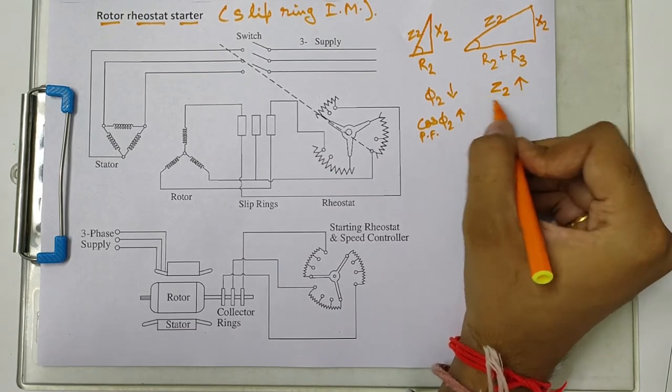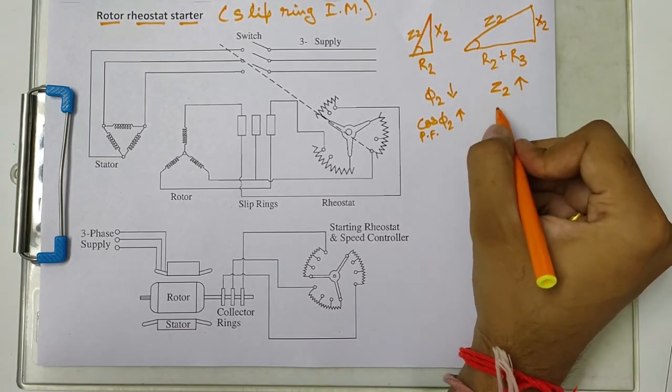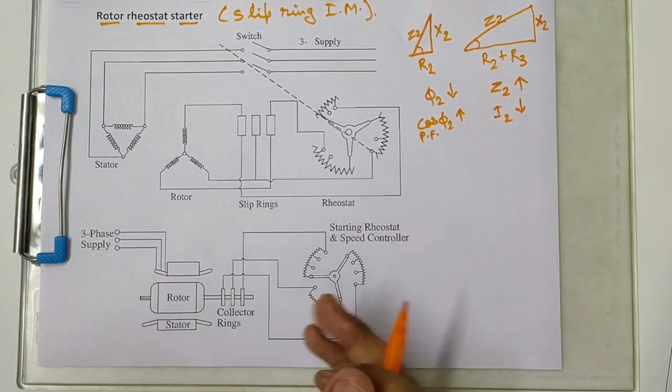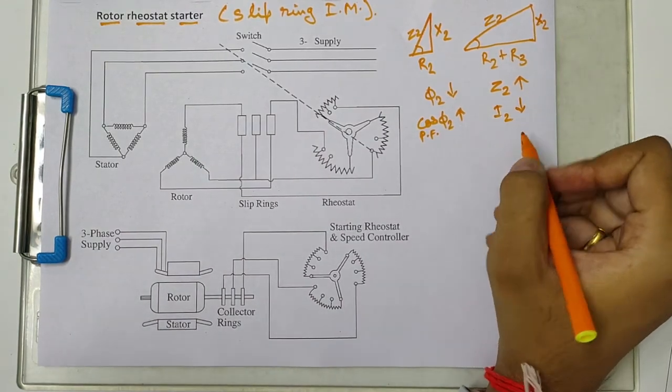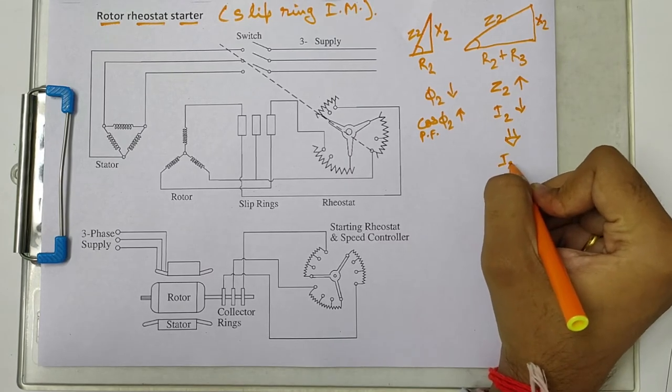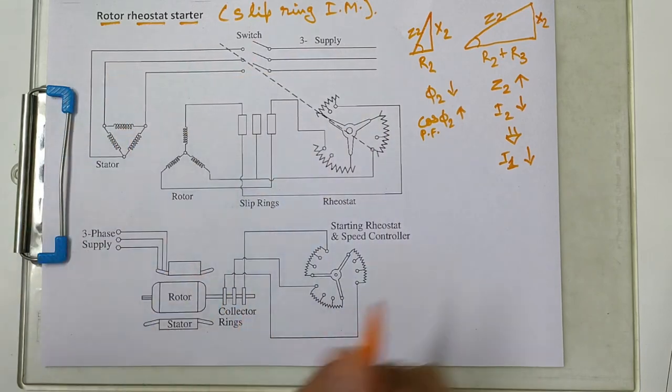This angle as you can see now reduces, so phi 2 reduces so cos phi 2 will increase, so power factor increases. But the impedance increases, so because of this increase in the impedance the secondary circuit current will also decrease.